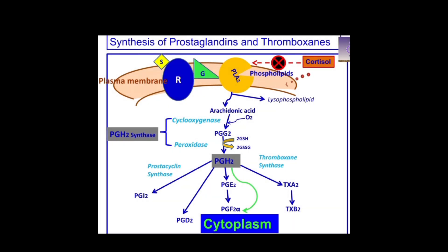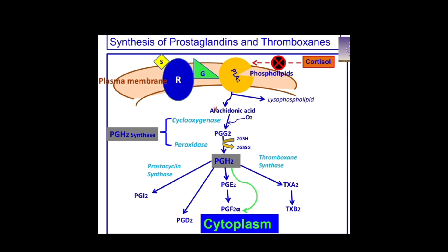Cortisol is a potent anti-inflammatory agent. It exerts its effects by inhibiting phospholipase A2. The inhibition of phospholipase A2 by cortisol prevents the release of arachidonic acid, which is the precursor of all eicosanoids.